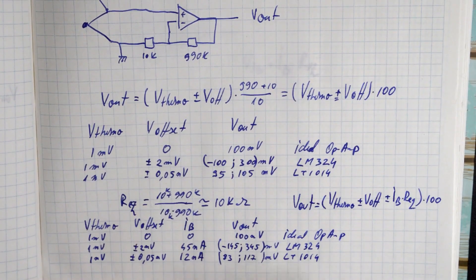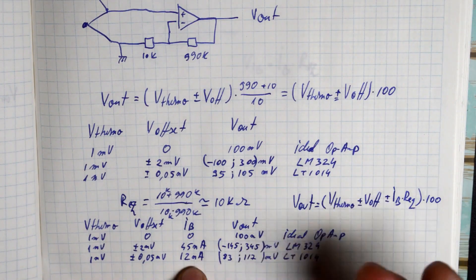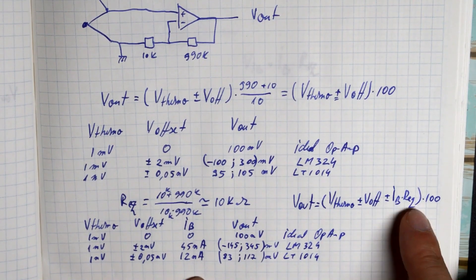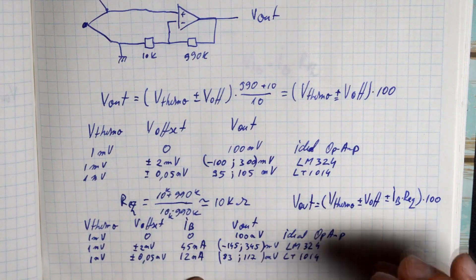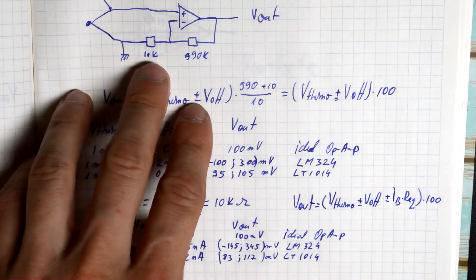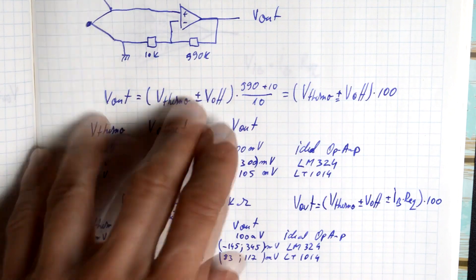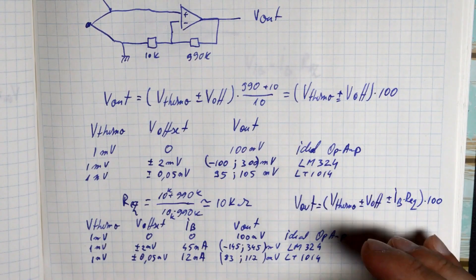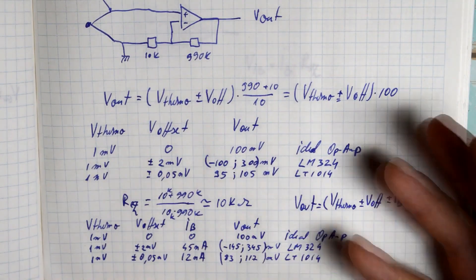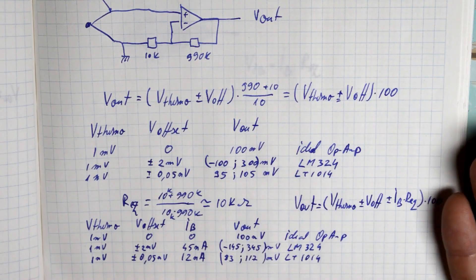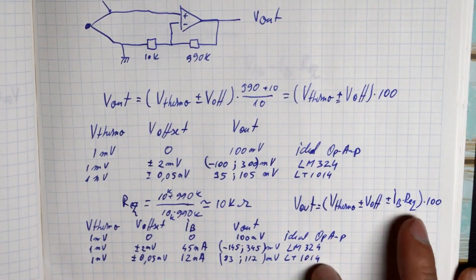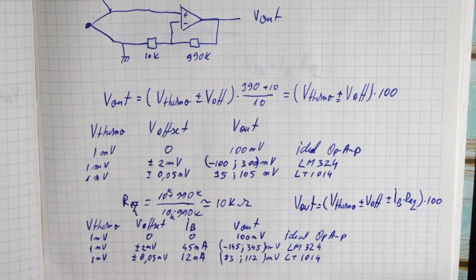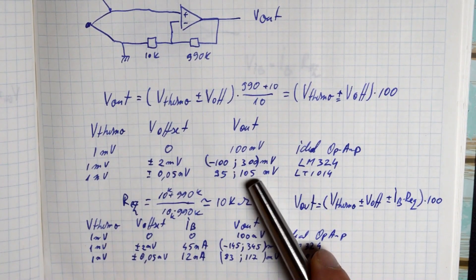There is nothing to do about the bias current, unless you want to choose a different op-amp, of course. But there is something you can do about the equivalent resistance. We can simply choose smaller resistors but keep the ratio. So by swapping the 10 kilo-ohm 990 kilo-ohm pair with, let's say, 100 ohm 9.9 kilo-ohms, we still have the times 100 gain factor, but the bias offset voltage caused by the bias current is 100 times smaller. We didn't affect the bias current, but we did affect the equivalent resistance. Basically, by using the new resistors, we can get values much, much closer to our initial output voltage.